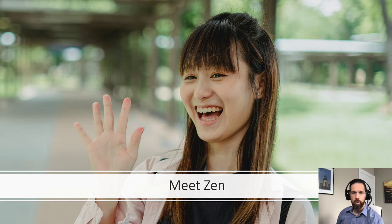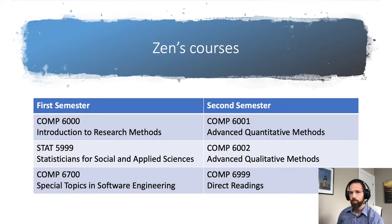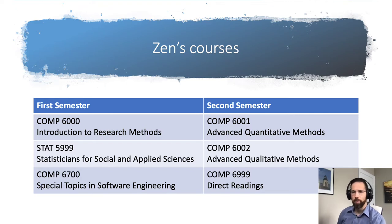Zen is interested in how virtual reality IDEs affect the dynamics of software teams. She'll be supervised by Prof. Balance. In her first semester, Zen takes three PhD-level courses: a core research methods course taken by all computer science PhD students, a statistics course, and a seminar course related to her research area. In her second semester, she takes advanced qualitative and quantitative methods courses, and a directed readings course with Prof. Hardy, an expert in virtual reality programming at McGill University.